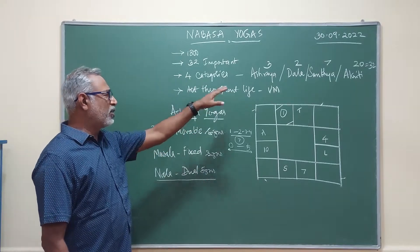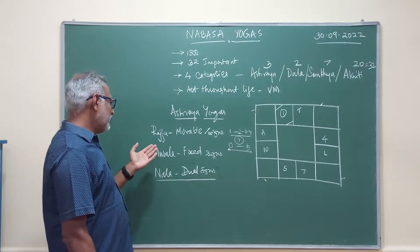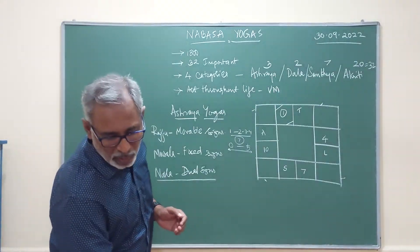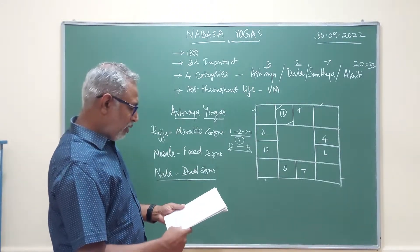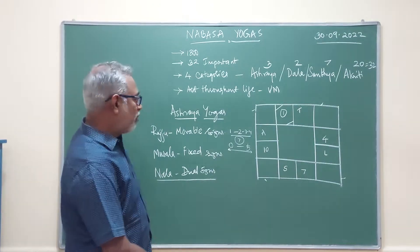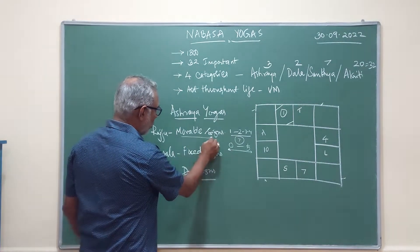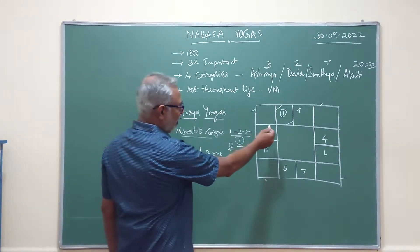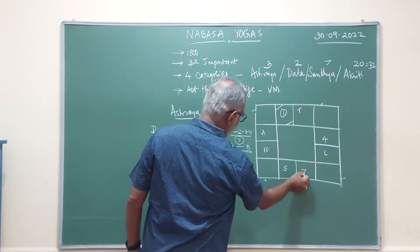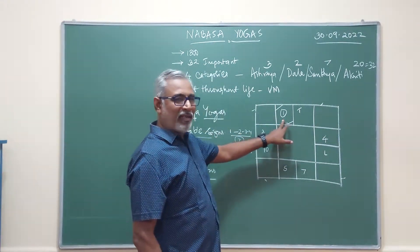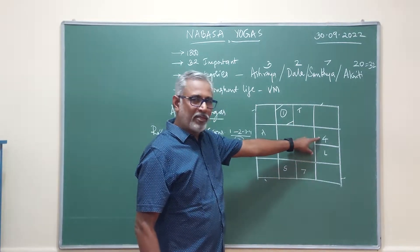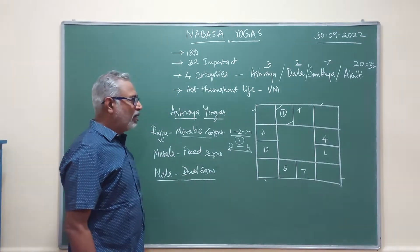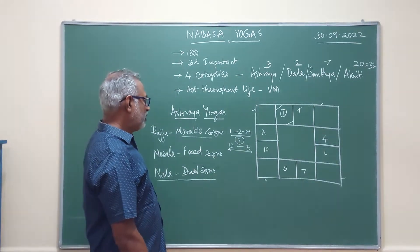Let us first talk about Ashraya Yogas — 3 Yogas in the Nabhasi Yogas: Raju, Musala, and Nala. As per the definition, Raju Yoga happens when planets are all placed in movable signs — Chara Rashi. These are signs 1, 4, 7, 10: that is Aries, Cancer, Libra, and Capricorn — they are all Chara Rashi.